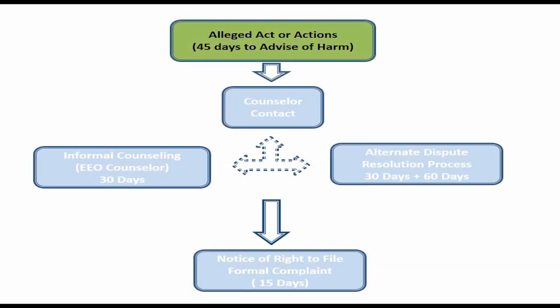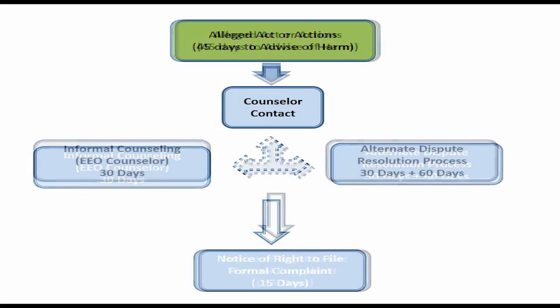You have 45 days to contact an agency EEO counselor from the date you believe you have been discriminated against. During the informal counseling process, which traditionally takes up to 30 days, the EEO counselor will discuss your complaint and inform you of your rights and responsibilities.